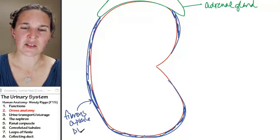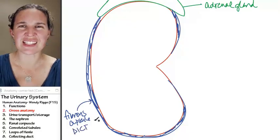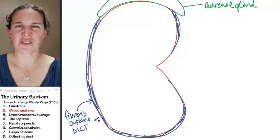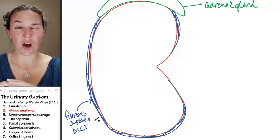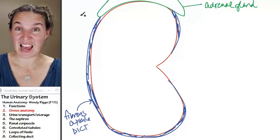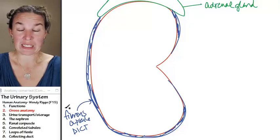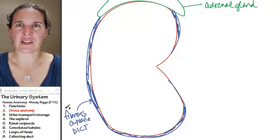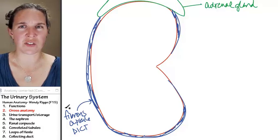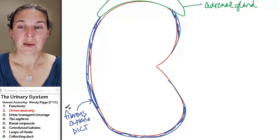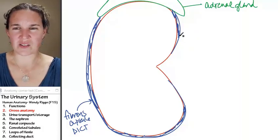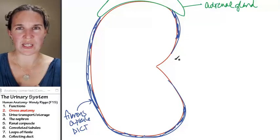It's made of dense irregular connective tissue. It's just a covering. There's also layers of fat that your kidney is embedded in in the posterior aspect of your abdominal cavity, but we're not going to focus on those. We're just going to focus on the actual kidney itself.